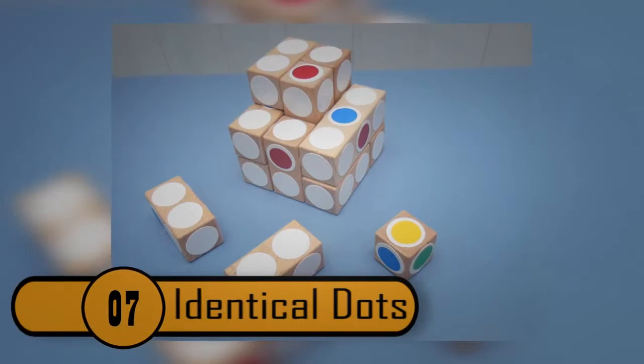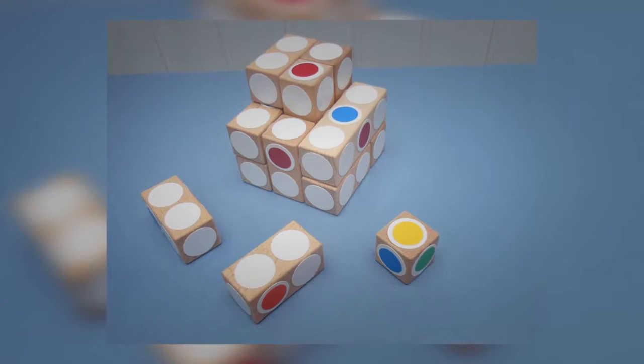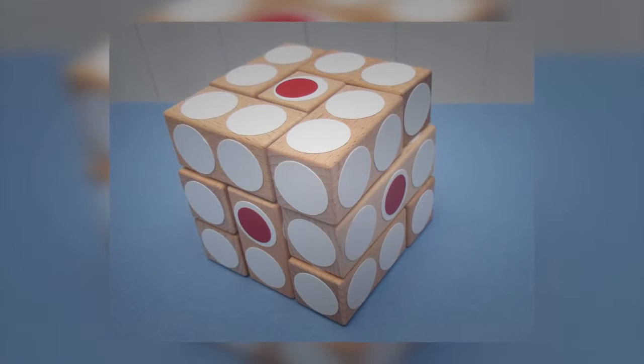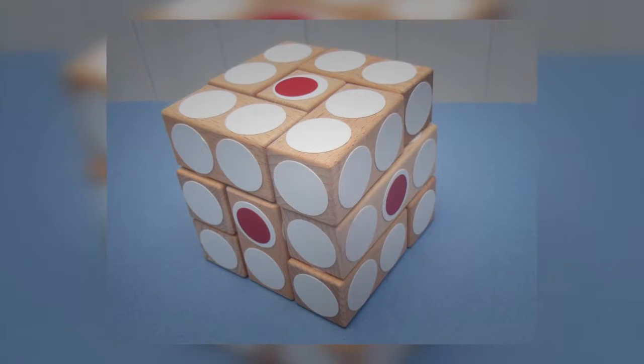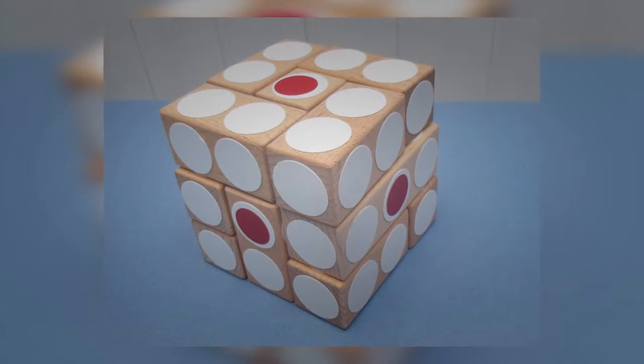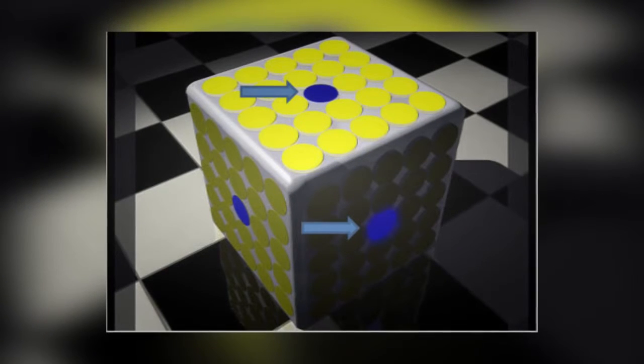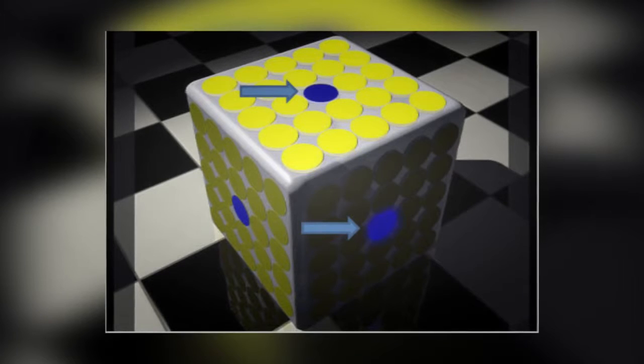Identical Dots. When you look at the two orange dots in these shapes, it looks as though the one on the right is much larger than the one on the left, right? Actually, the two are identical in size. It's the size of the blue dots around the orange dots that make it look as though the orange dots are different sizes.